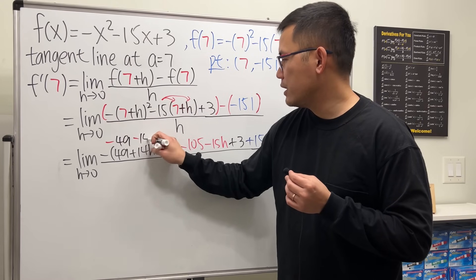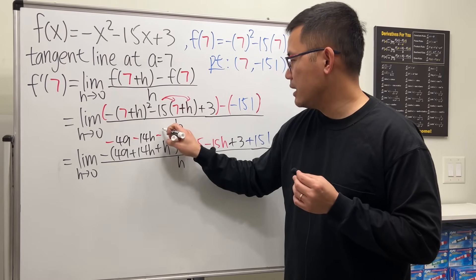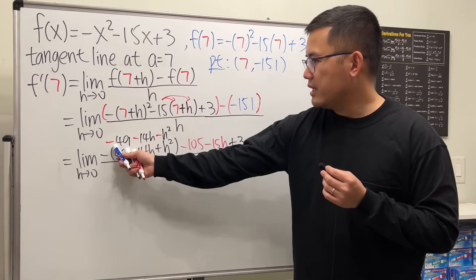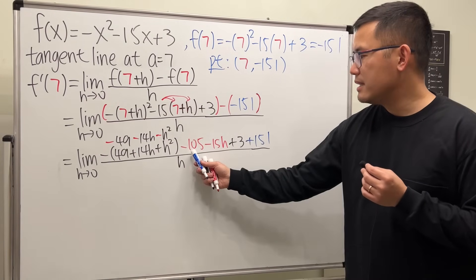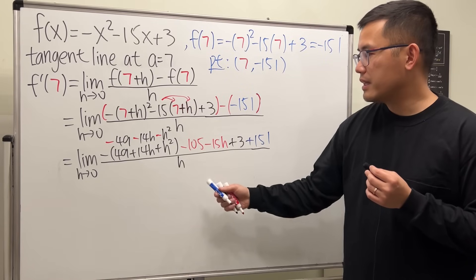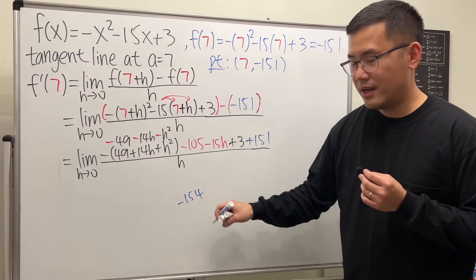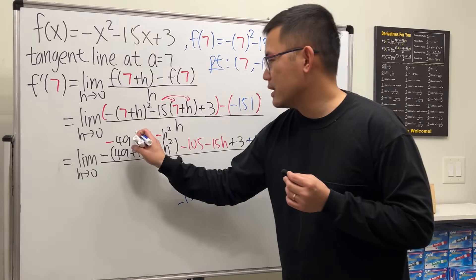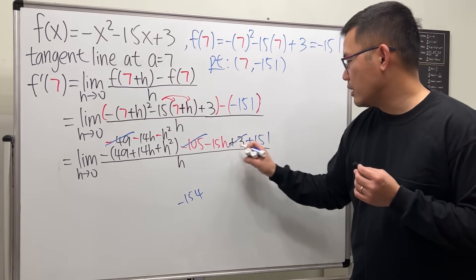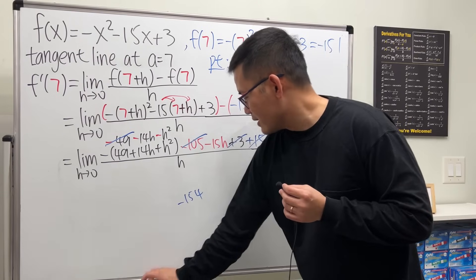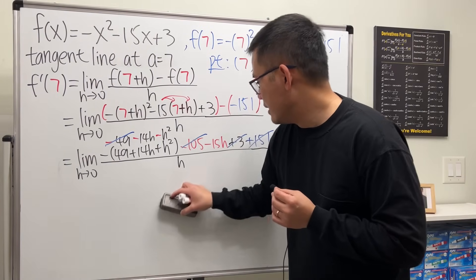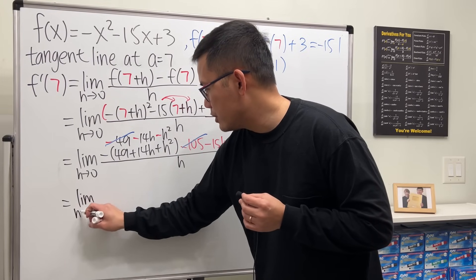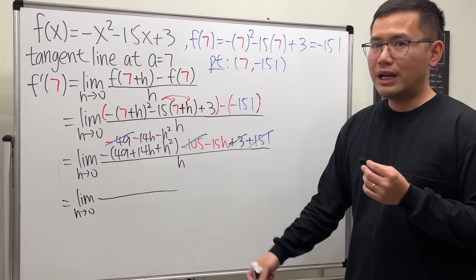Now distribute the negative: that's negative 49 minus 14h minus h squared. Check this out — negative 49 and negative 105 give negative 154, and we also have positive 154, so they cancel to zero. That's very nice!